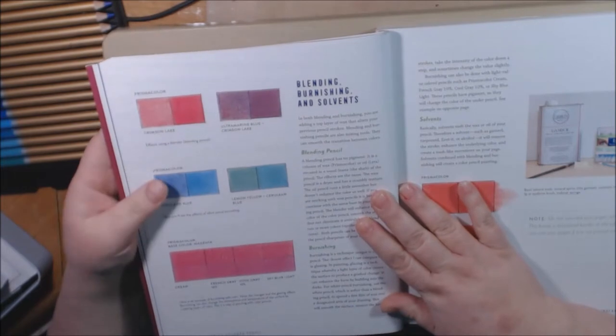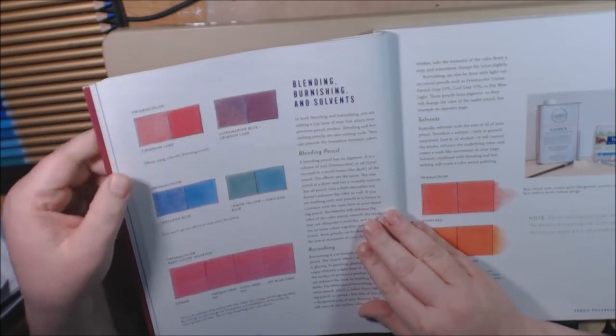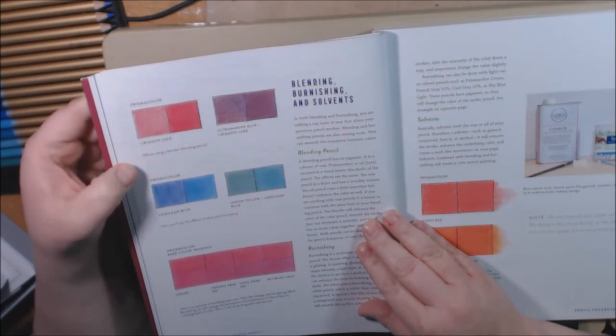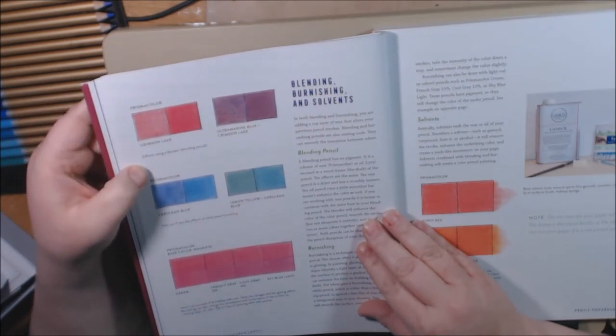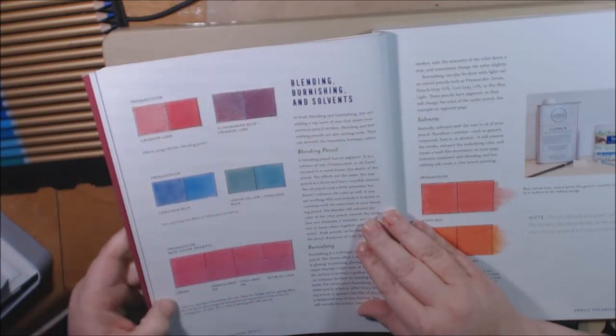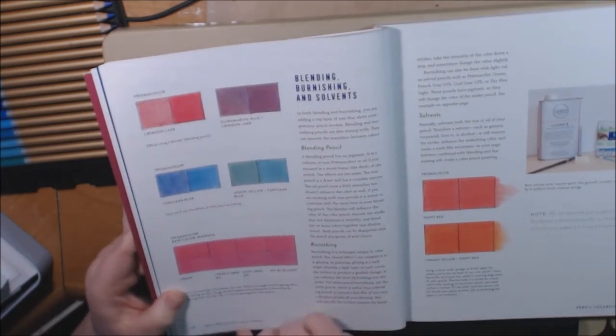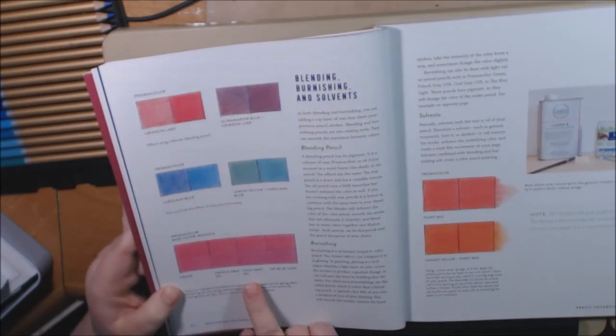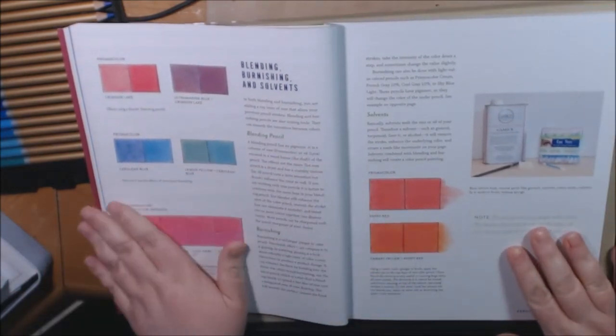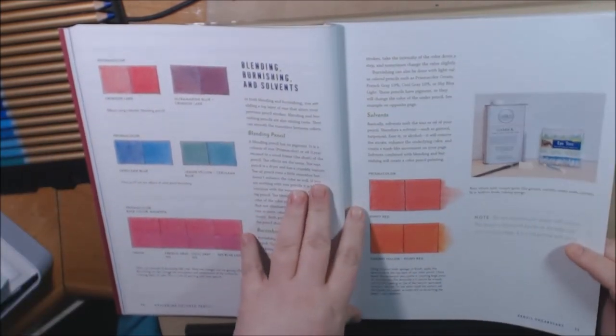And on this page, it's all about blending, burnishing, and solvents. All of these are Prismacolors and they give the color names at the bottom. I know you really can't see that very well. But these are burnished with the blending pencil. This one is blended with a white pencil. And these, right here you can see the bottom, these are done with other colors. Like cream, french gray 10%, cool gray, and sky blue. So they go into how, the effects of how things look, the different techniques. And here, this is solvents.